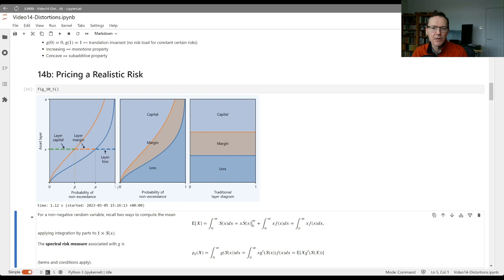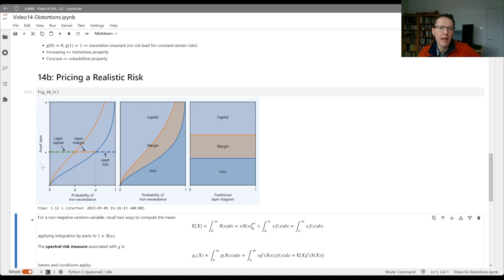You can also see that the distance to the x equals one line here is the survival function. If you imagine rotating this plot clockwise by 90 degrees, you would get a decreasing function like the survival function. On the y-axis, we're going to consider different asset layers.